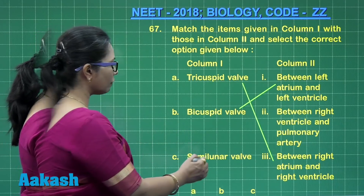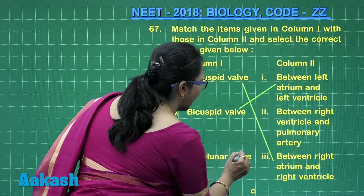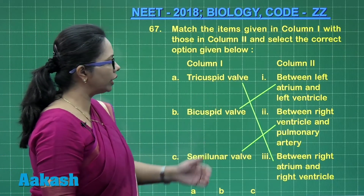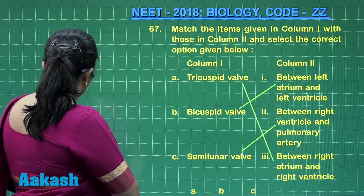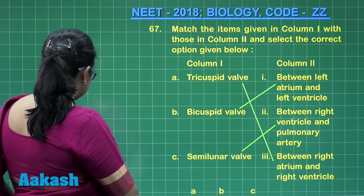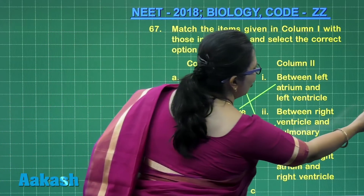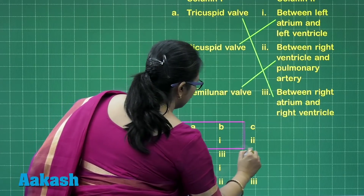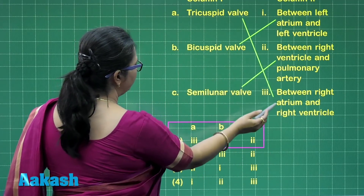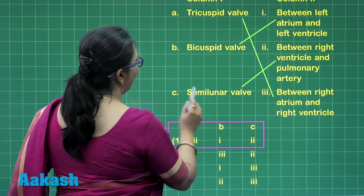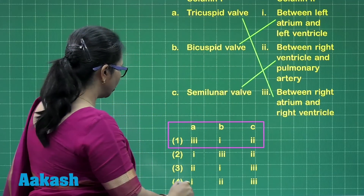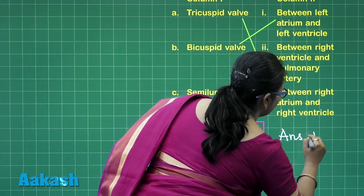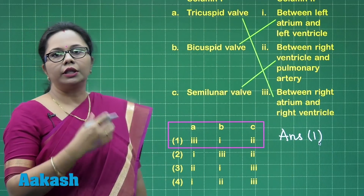The semilunar valves are present between the right ventricle and the pulmonary artery, and also at the opening of the aorta. Matching the items, A matches with 3, B with 1, and C with 2. So the correct answer is option 1.